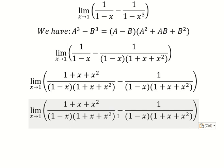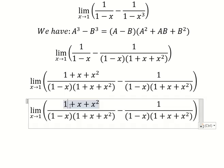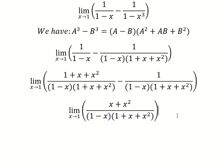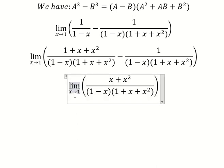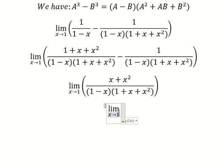So one minus one, we cancel. Now when we put number one in here, you get number zero. This one we have number two, this one we have number three. So in this case we need to consider the limit on the left and the limit on the right.